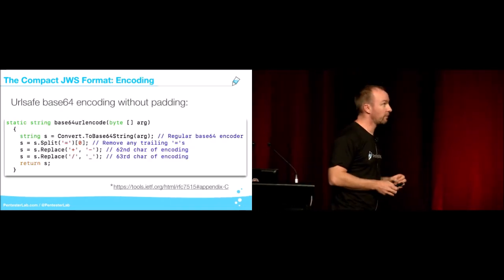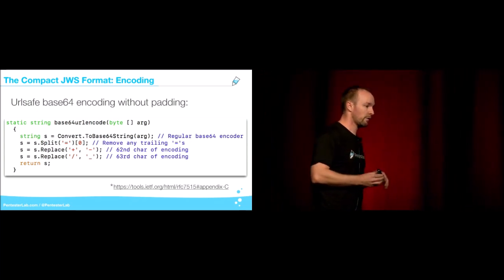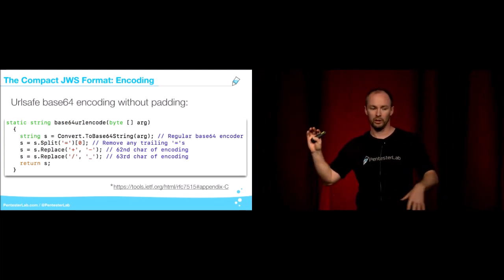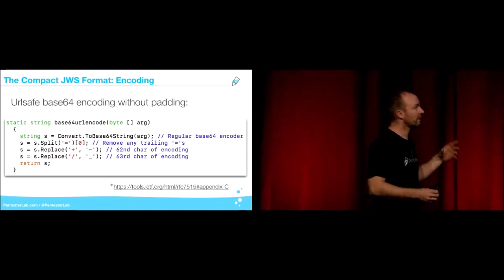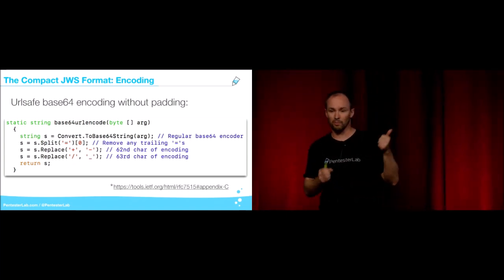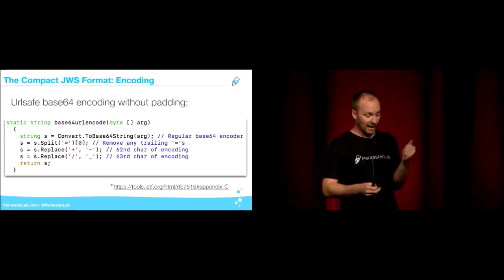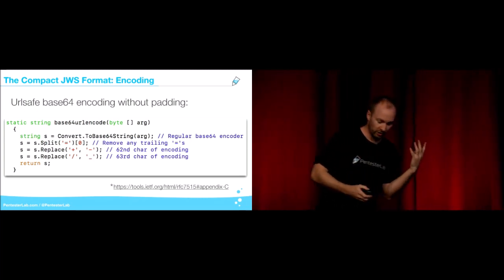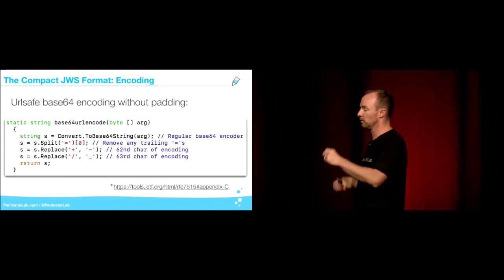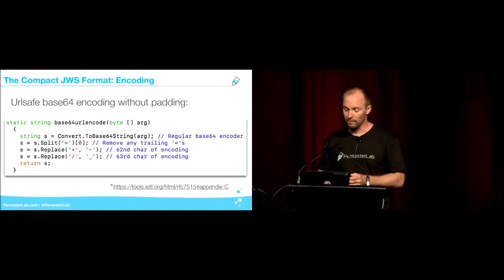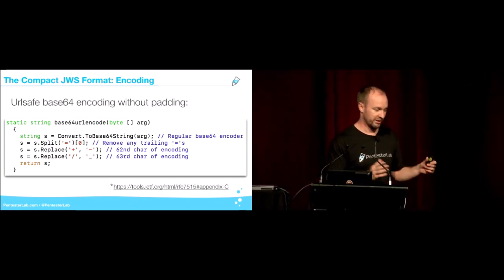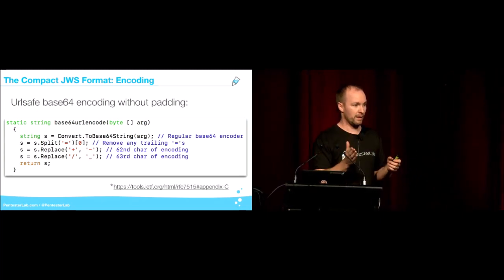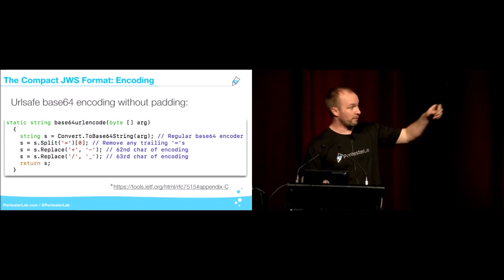JWT uses URL-safe base64 encoding without padding because people use JWT for web stuff a lot. Characters like plus (which encodes as a space) and slash (which can break a path) can mess things up. JWT URL-safe encoding removes these problematic characters and also removes the equals sign, because that's how you split between a name and value in HTTP parameters.